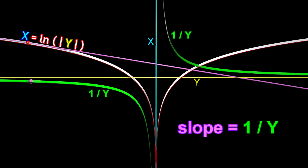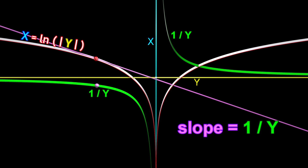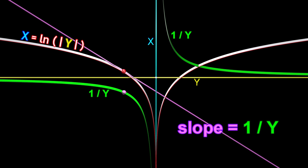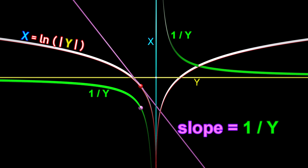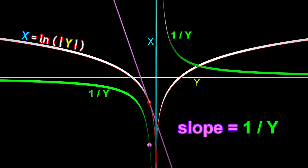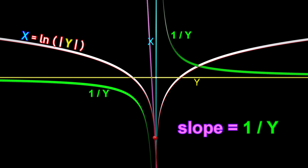If the height of the purple sphere is a large negative number, the slope of the purple line is a large negative number.